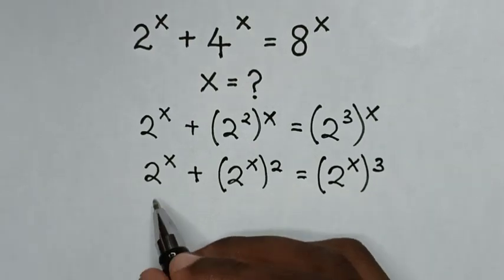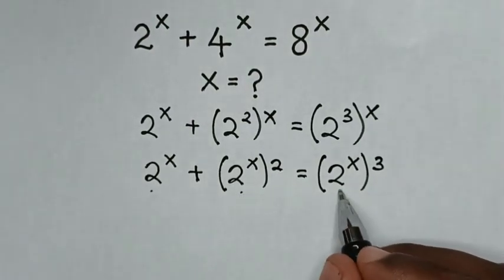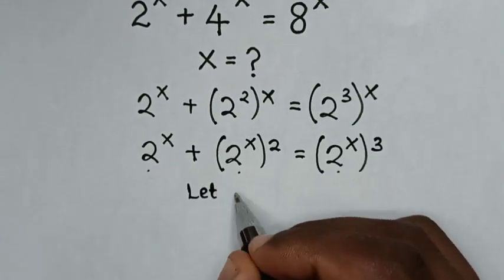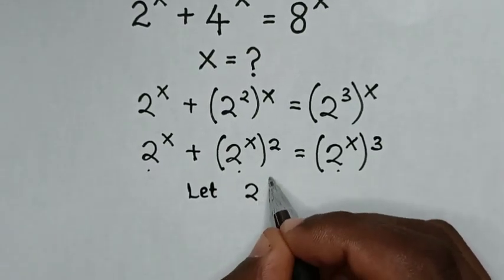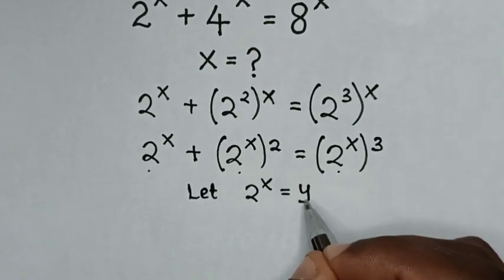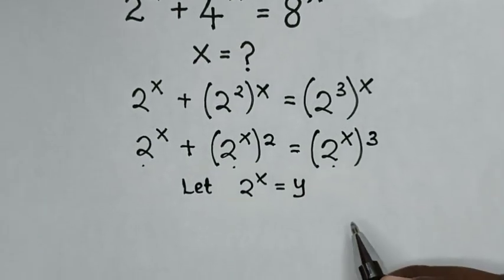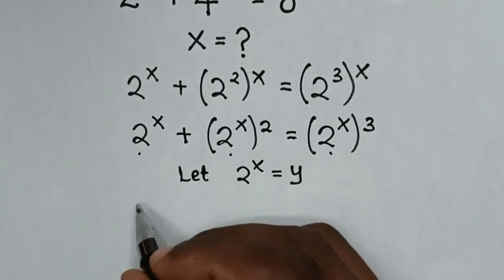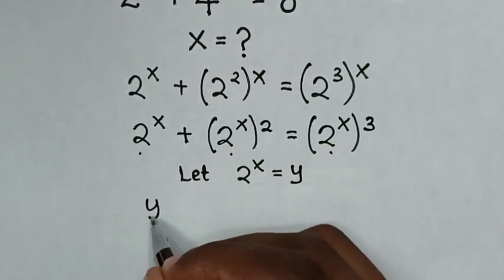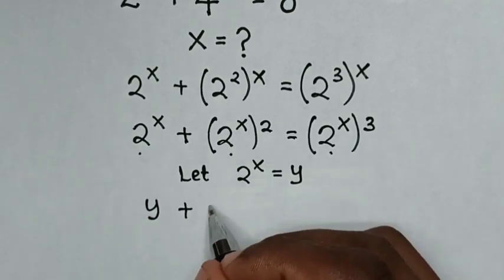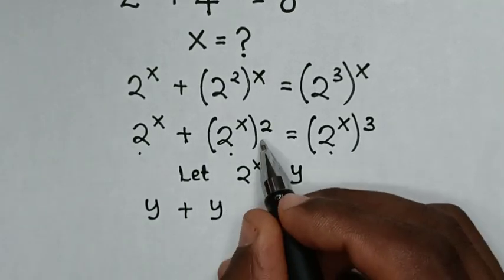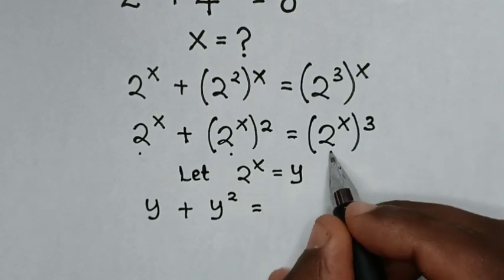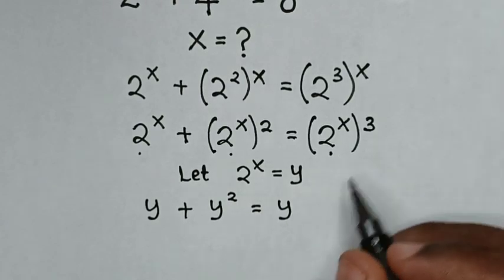In this equation, 2 power x is common, so we let 2 power x equal to y. We substitute y into the equation, so it will be y plus y squared is equal to y cubed.